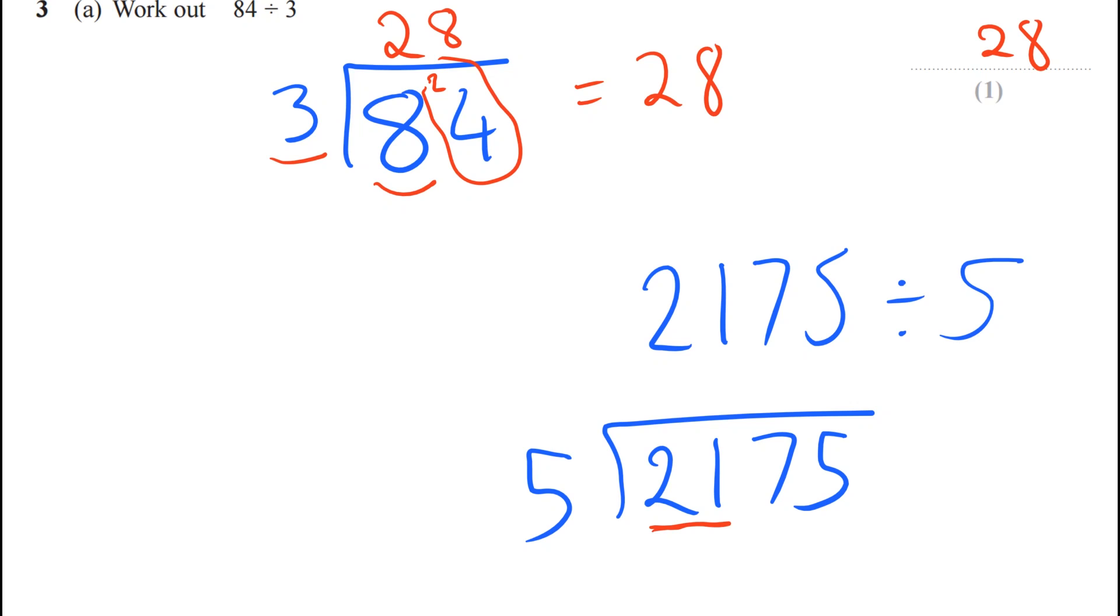Does 5 go into 21 how many times? And remember you can't go over. Well 5 times 4 is 20. And what's the remainder? The remainder would be 1. So the gap between 20 and 21 is 1. Draw the circle.